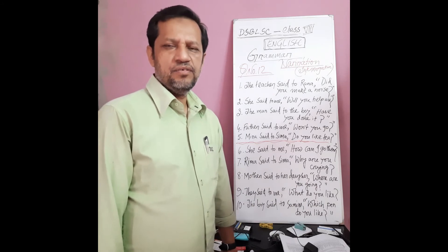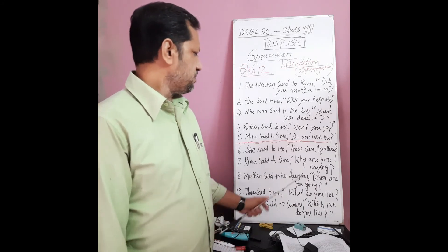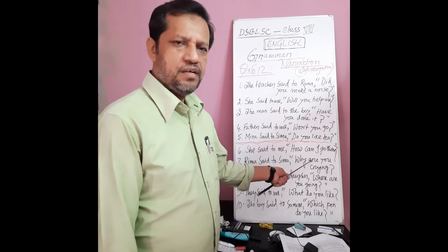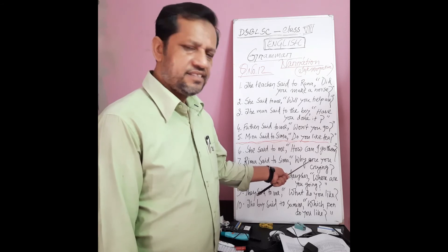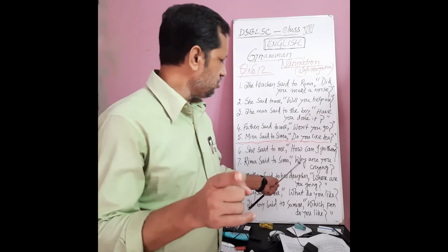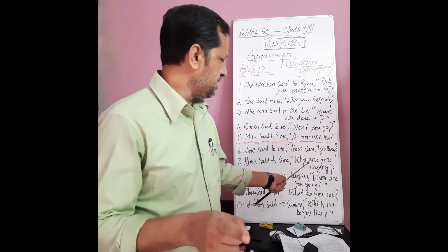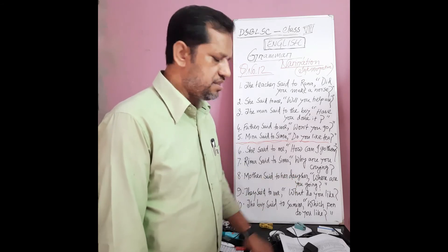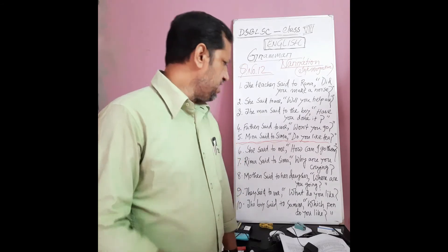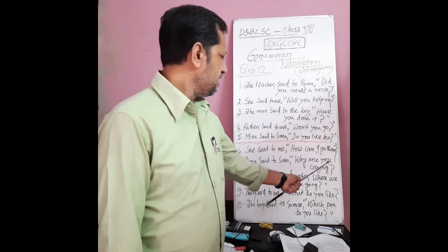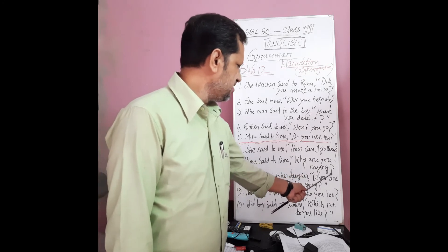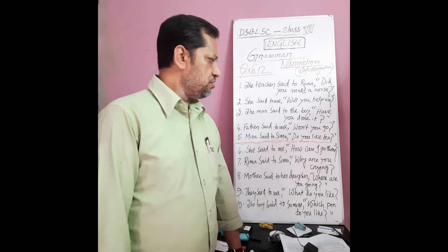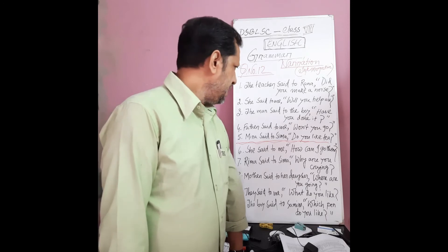You have to remember a very important thing, students. After a WH-word in the question, you will get a verb. But in your answer — the indirect speech — after the WH-word you have to use the subject. For example, in the question: 'Why are you crying?' But in your answer you write: 'Why she was crying.' Most students make this type of mistake in the exam.